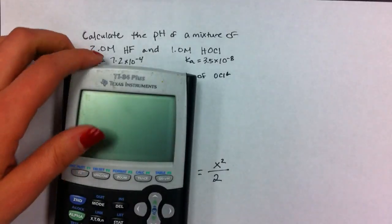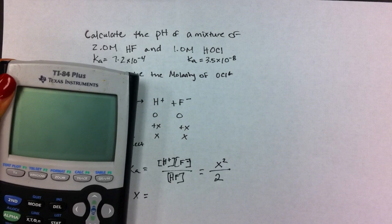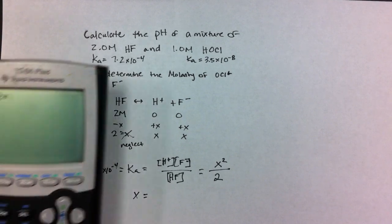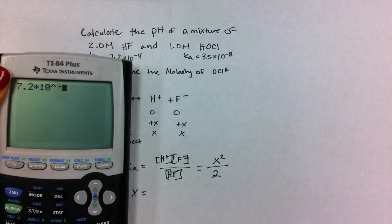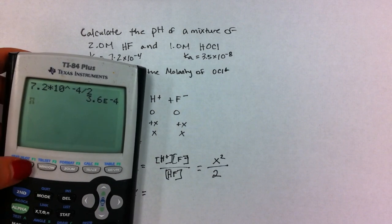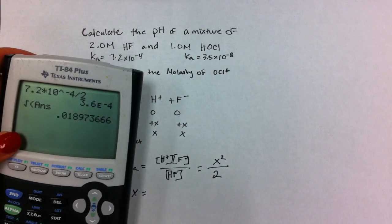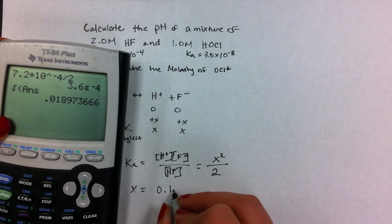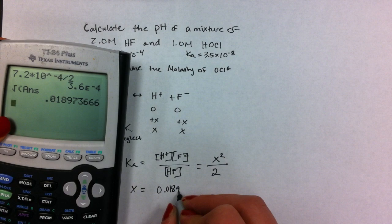Sorry guys, I didn't do my homework. So 7.2 times 10 to the negative fourth divided by 2, square root, and X equals 0.01897.